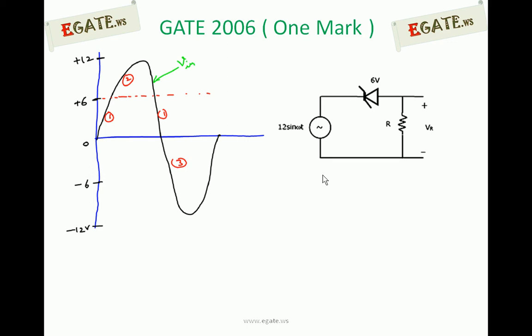Because for the Zener diode, if you are applying negative voltage, it comes into forward bias. In forward bias, there is only one option — it acts as a short circuit. So for voltages less than 0, the diode comes into forward bias. That is why we treat all negative voltages as a single region (Region 3), since for all these negative voltages the Zener diode comes into forward bias.